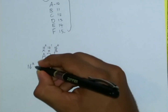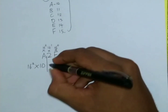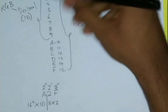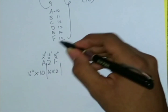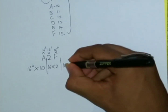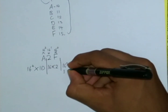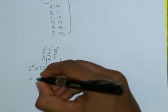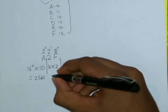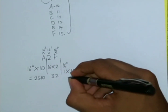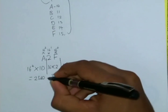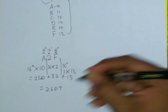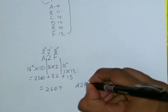16 to the power 2, into 10. And then 16 to the power 1, which is 16, into 2 — these are gonna be as they are. And F is 15, so 16 to the power 0, which is 1, multiplied by 15. So we're gonna get 2560 here, and then this is gonna be 32, and then this is 15. So if you add them you're gonna get 2607, which is A2F in hexadecimal.